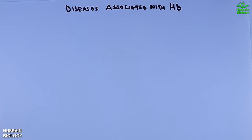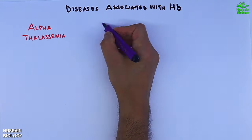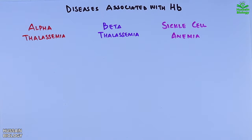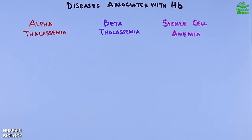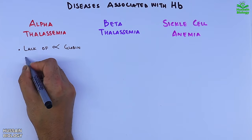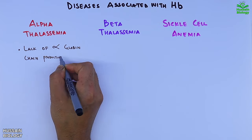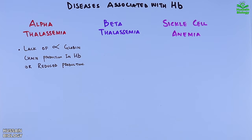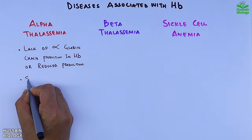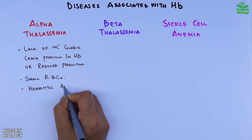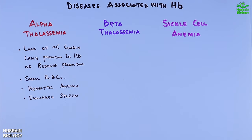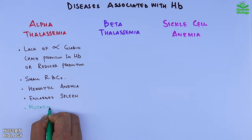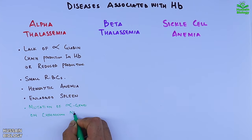There are three major diseases associated with hemoglobin: alpha thalassemia, beta thalassemia, and sickle cell anemia. In alpha thalassemia, there is a lack of or reduced production of alpha globin chains. Affected individuals have small RBCs with hemolytic anemia and an enlarged spleen. The cause is mutation of alpha globin genes on chromosome 16.